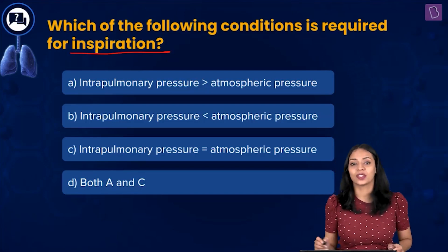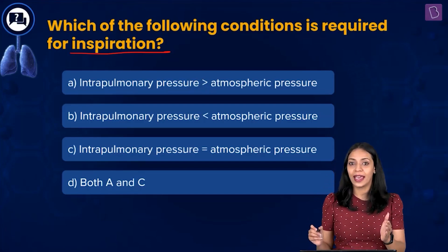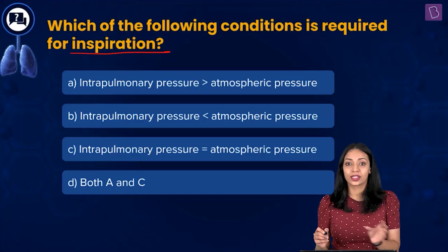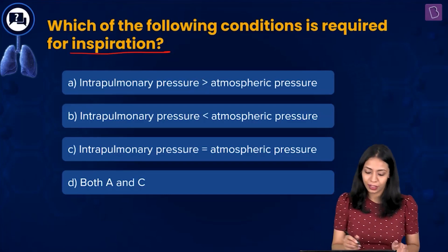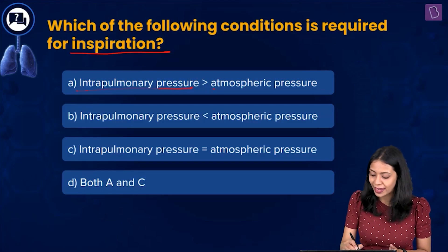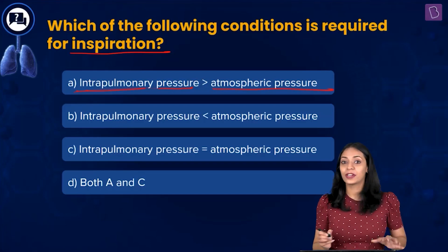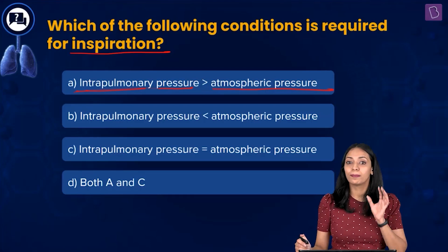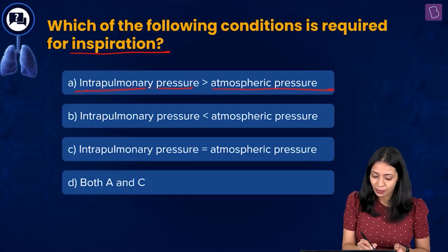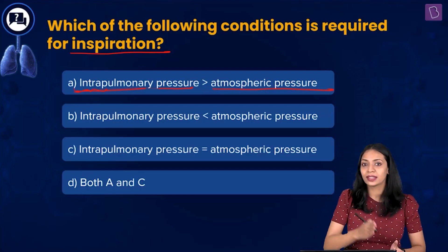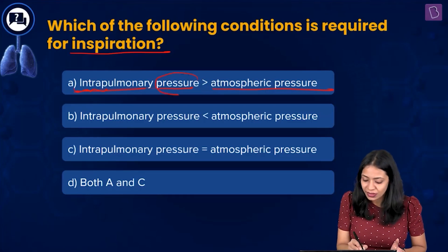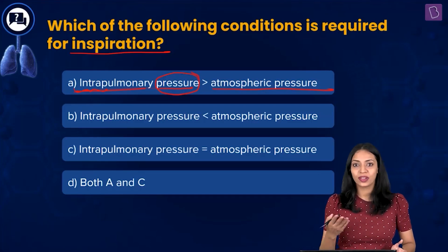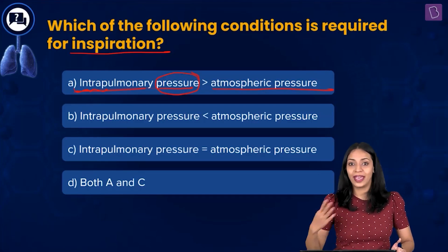Inspiration is the process by which we take in air from the atmosphere into our lungs. Among the options, we have the terms intrapulmonary pressure and atmospheric pressure. Intrapulmonary pressure refers to the pressure of air within our lungs — 'intra' means inside, and 'pulmonary' relates to the lung. Atmospheric pressure is simply the pressure of air in the atmosphere.